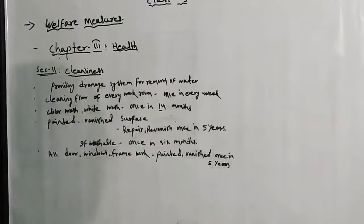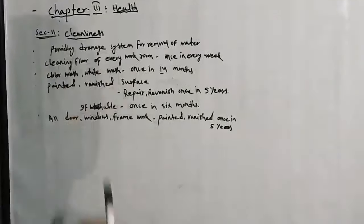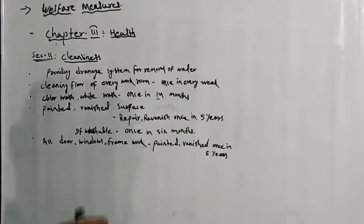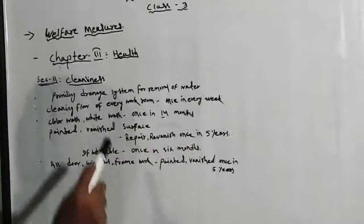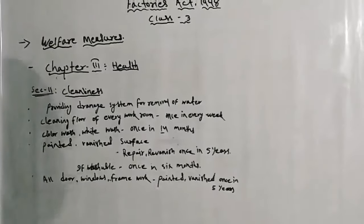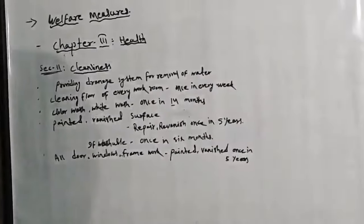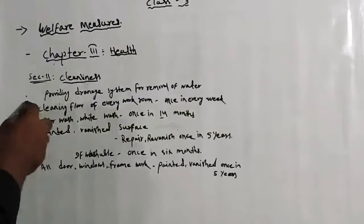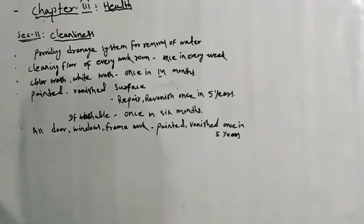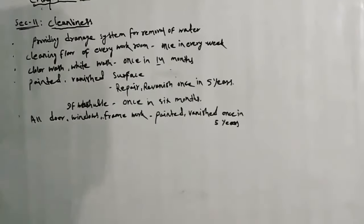Health ke under pehla aata hai, cleanness, which has been defined under Section 11. Cleanness bota hai ki every factory should be properly clean, so that there should be no bad impact on the health of the workers. First point is providing a drainage system for removal of water — factory me jo paani nikalta hai, uske liye achi drainage system honi chahiye.